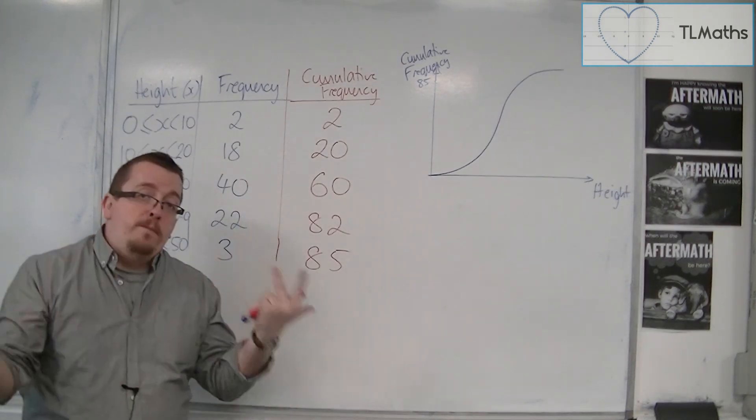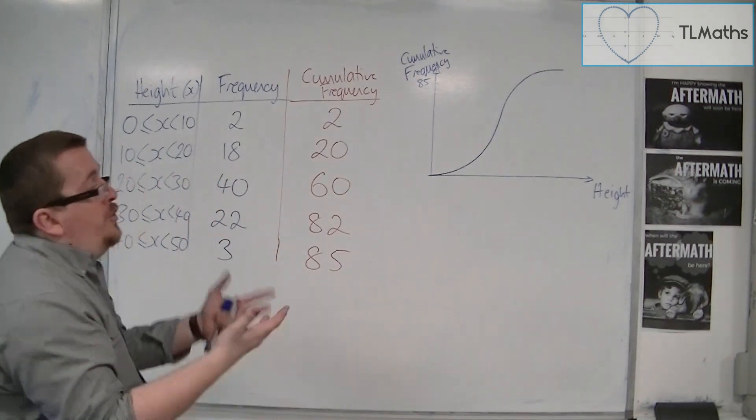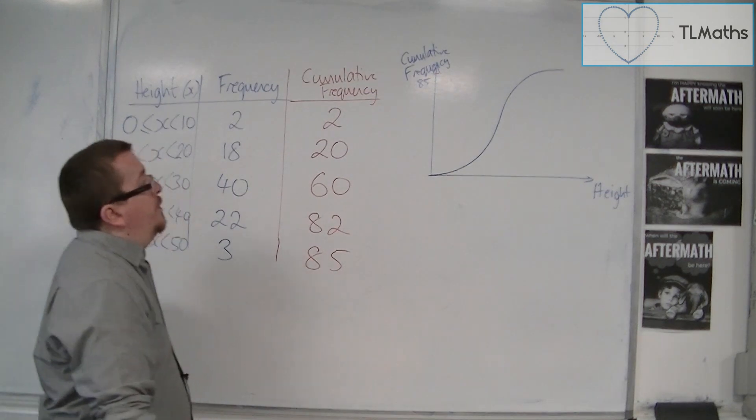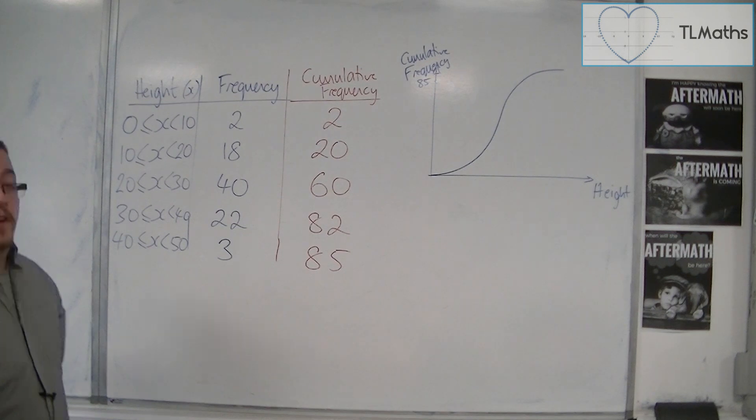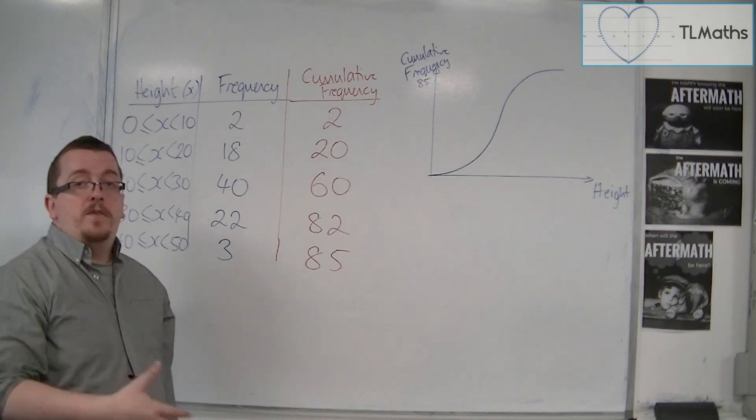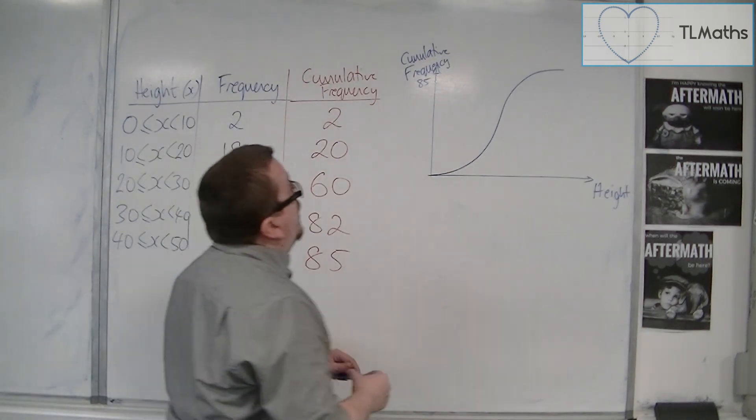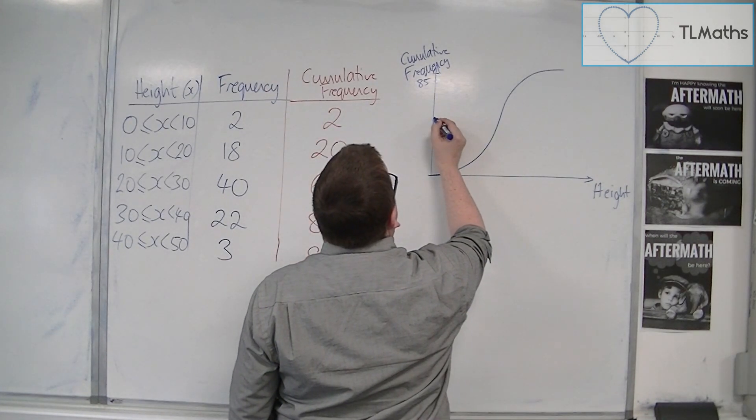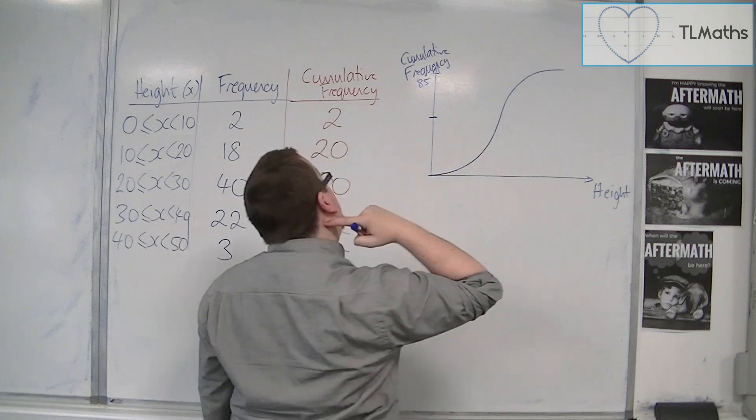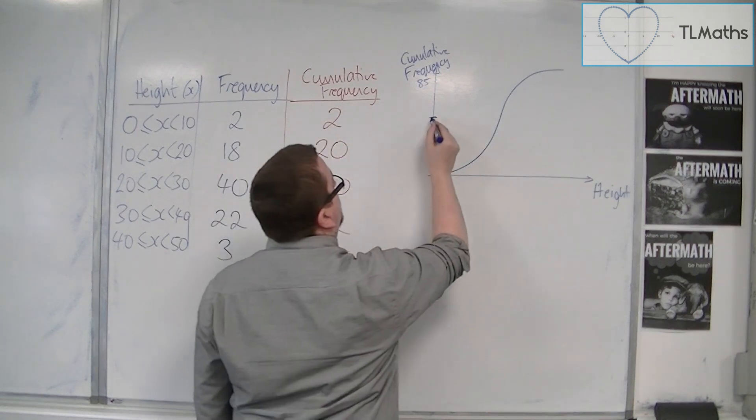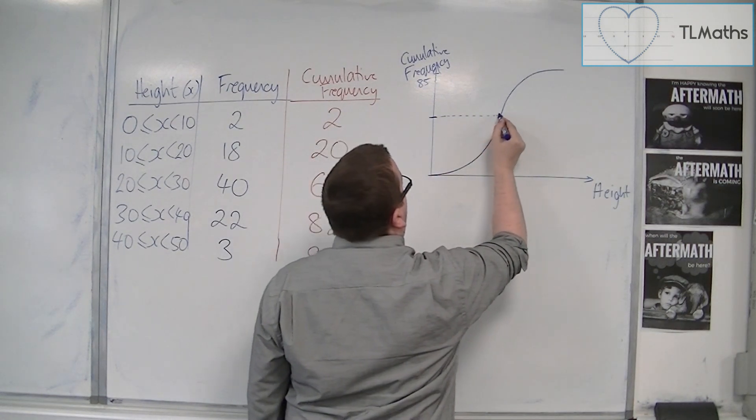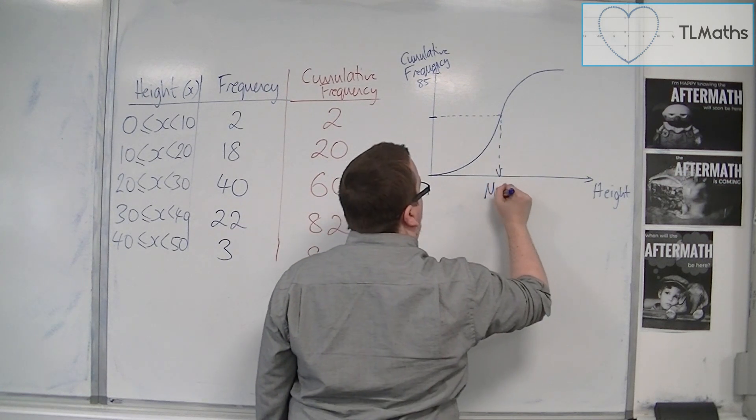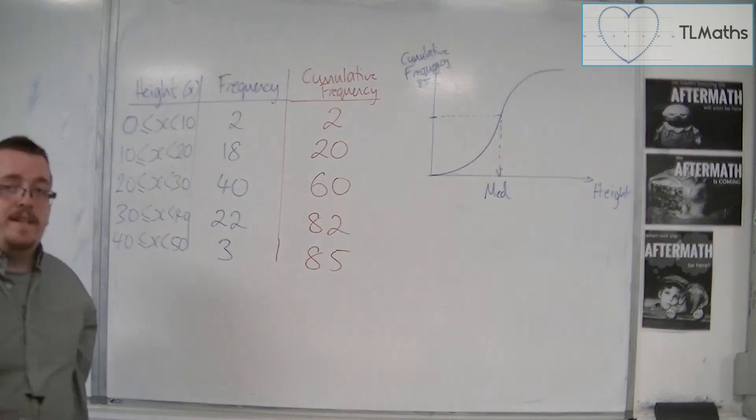Now, from that graph, what could you potentially be asked? You could potentially be asked things like find the median. The median value would be looking at the halfway point, the 50th percentile, and you would go along to the curve. You'd go straight down, and you'd read off. That would be your median value.